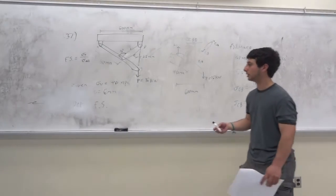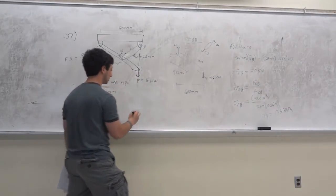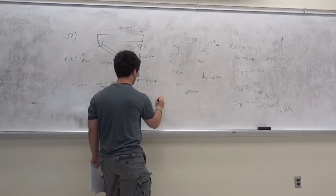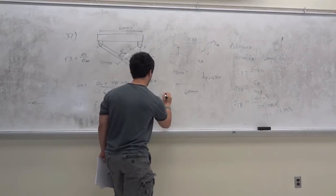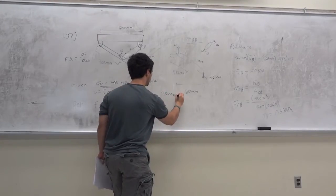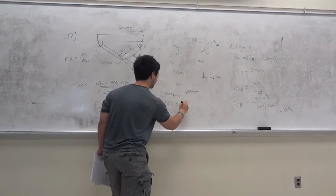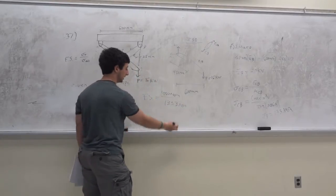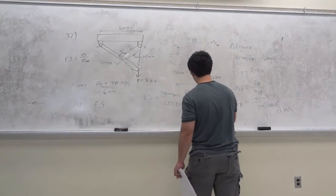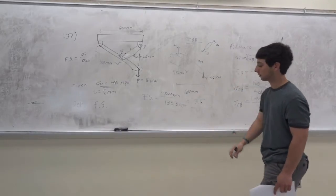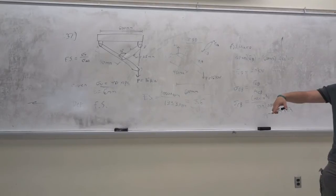This is the allowable stress, which equals 133.3 MPa. Now that we have the allowable stress, we can get the factor of safety. The problem gives you the ultimate tensile stress, so the factor of safety equals the ultimate stress — 480 MPa — over the allowable stress — 133.3 MPa. The MPa units cancel, giving a factor of safety of 3.6.